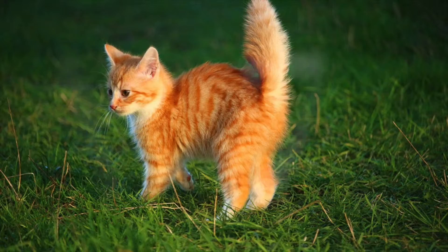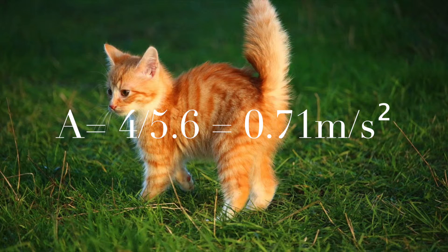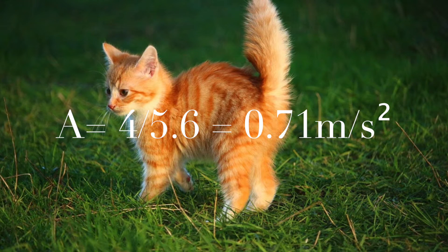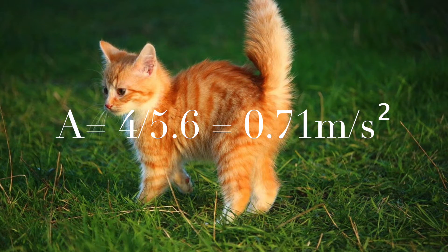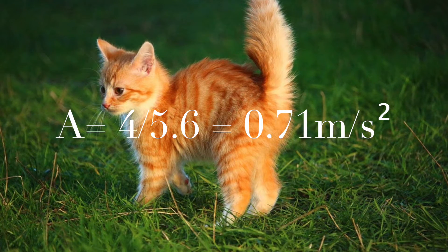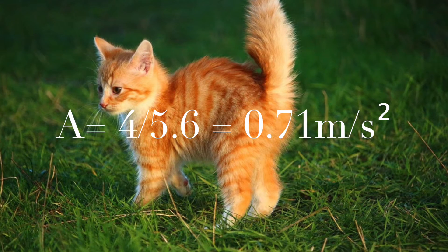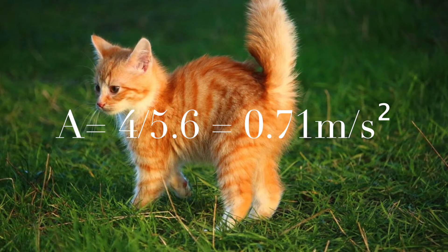However, say a cat goes from 2 metres to 6 metres per second in 5.6 seconds. In order to work out the change in velocity, you have to do the velocity take away the initial velocity. So that's simply 6 minus 2, because it's now walking at 6 metres per second from 2 metres per second. And that is V minus U.